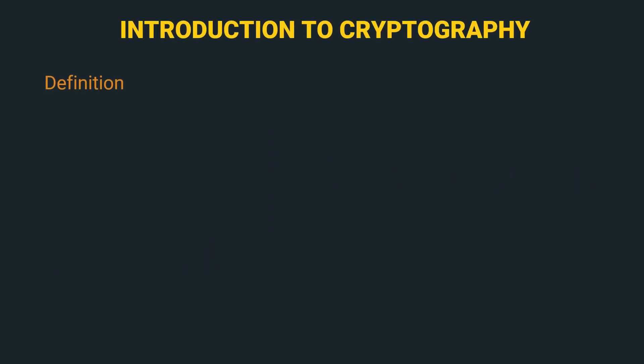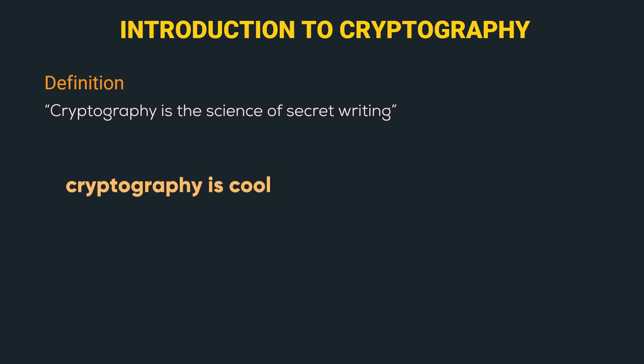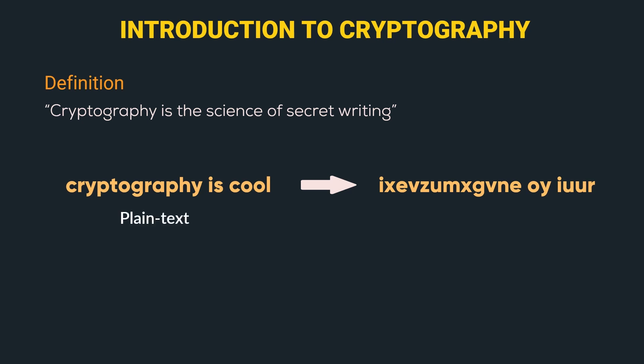So let's start with the definition of cryptography. Cryptography is the science of secret writing. In cryptography, we convert a normal looking text to an unintelligible text. At first glance it seems like an alien language, but there is a systematic process behind the conversion. The technical term for the normal looking text is called plaintext, and the one for the unintelligible text is called ciphertext.